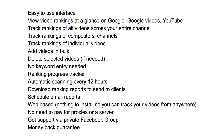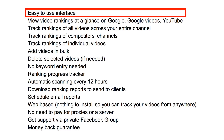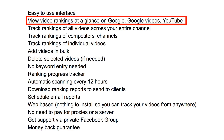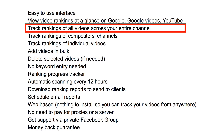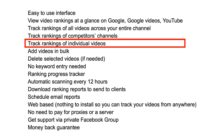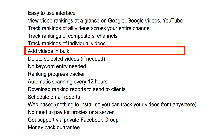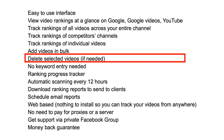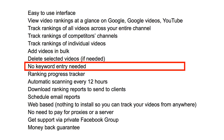Let's look at some of the cool features. Easy user interface — view video rankings at a glance on Google, Google Videos and YouTube. Track the rankings of all your videos across your entire channel. Track the rankings of your competitors' channels. Track the rankings of individual videos. Add videos in bulk. Delete selected videos if needed. No keyword entry needed — just add your channel URL.